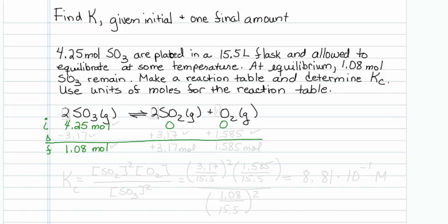This is what I call backing out the delta row. If I know the initial amount and I know the final amount of SO3, then I can get delta. That would be 4.25 minus 1.08, so this value has to be minus 3.17.